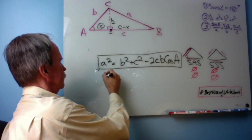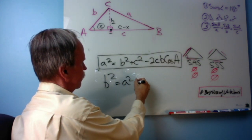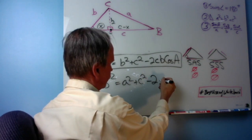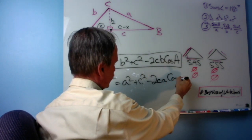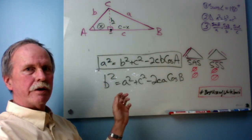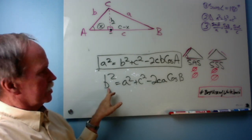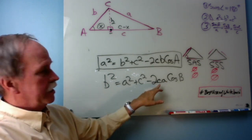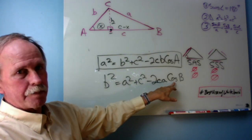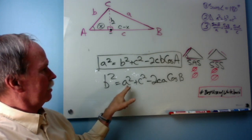All right, let's look at another one. How about this one? You see the similarity in the form? All right, we're solving for B squared. We're subtracting two times the other sides, multiplied by the cosine of the angle responsible for B. And then we have the other two squared.